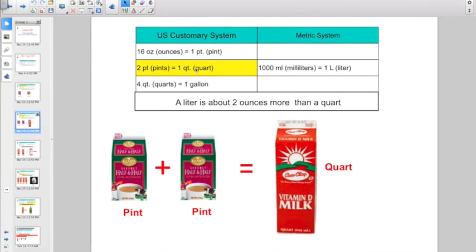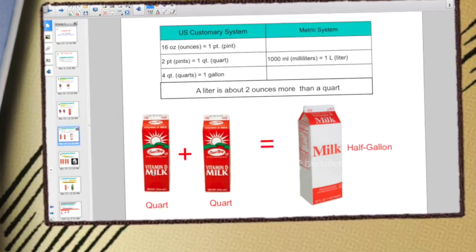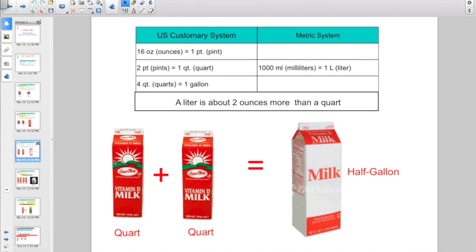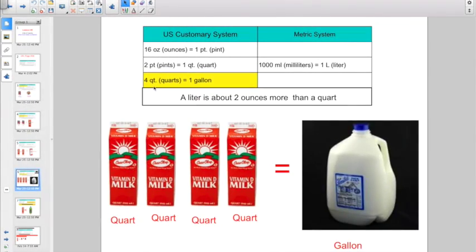Two pints equaling a quart. So remember quarts? Those are those tall, skinny milk containers. I know my mom still gets her milk in quarts because she doesn't drink a whole lot. Over in our house, we have to buy them by the gallon. So if you had two of those tall, skinny milk containers that are quarts, two of them would equal a half gallon.